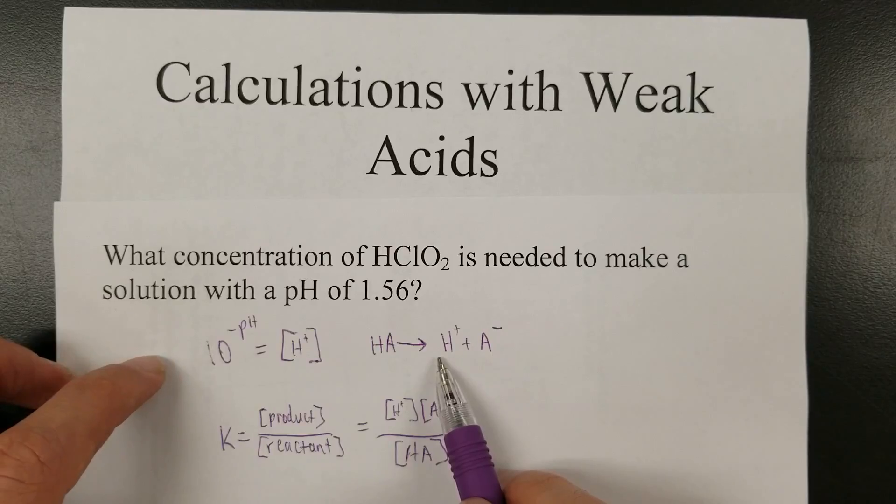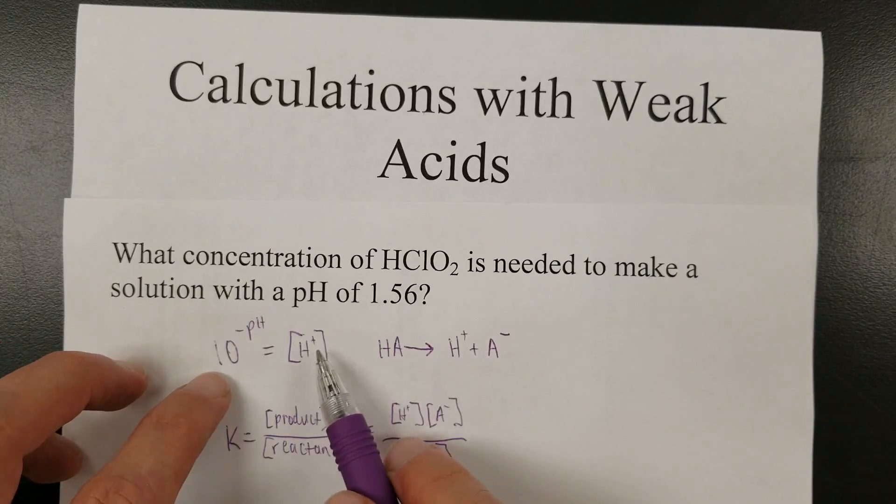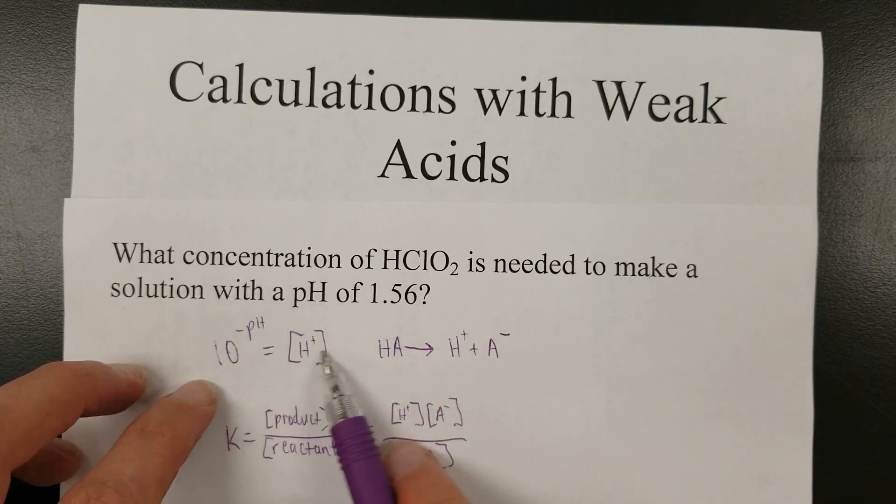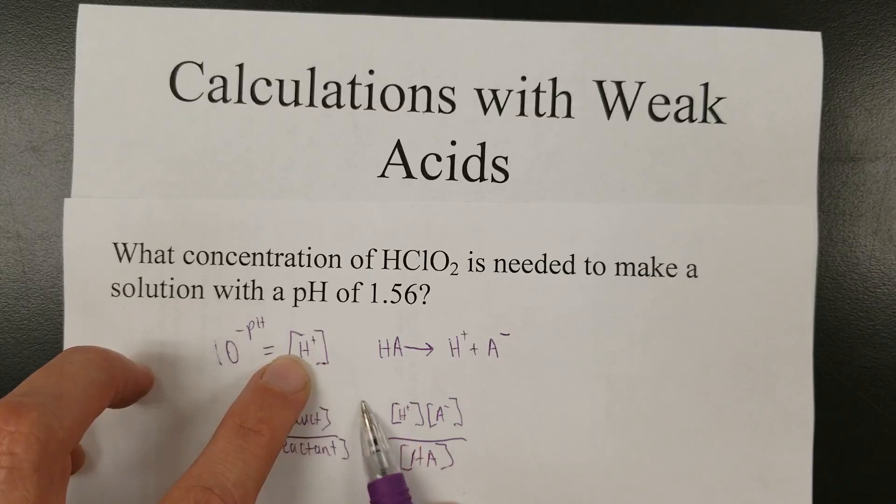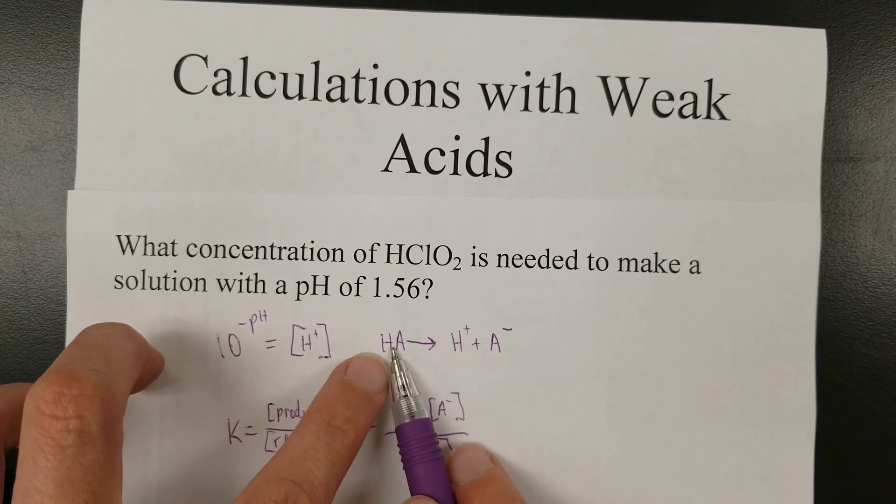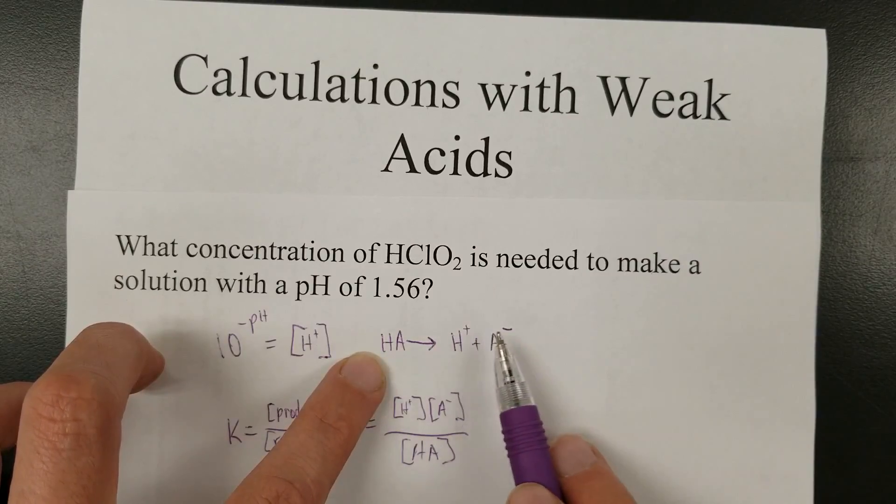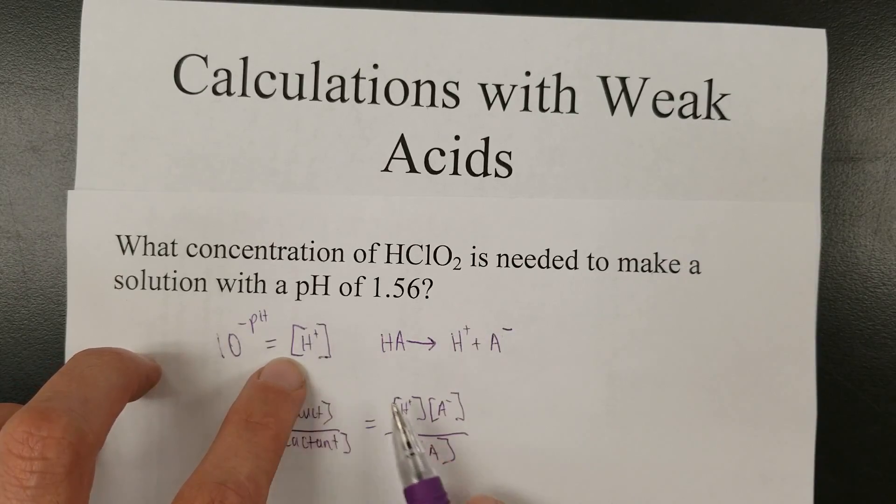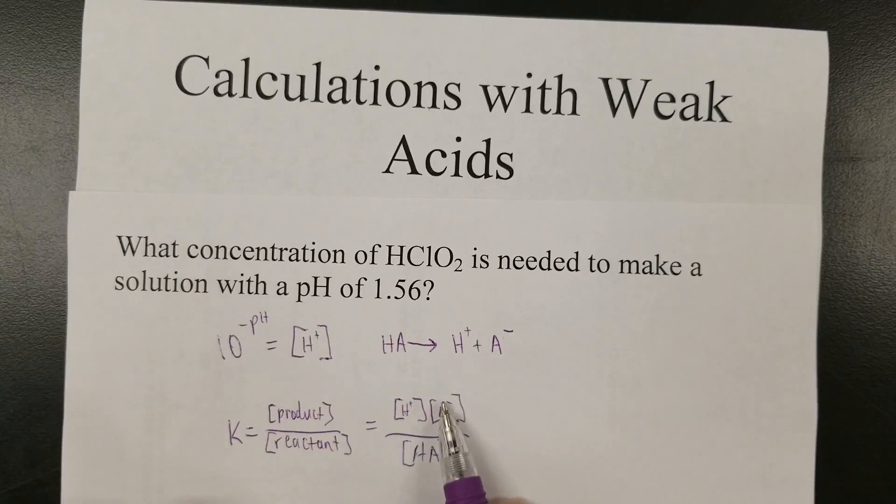So our plan is to use this number to get this. And from here, we can figure out what these are. This will be the same as this, because after all, look at this balanced equation. For every one of these, there's one of these and one of these. So from this, we can get these.